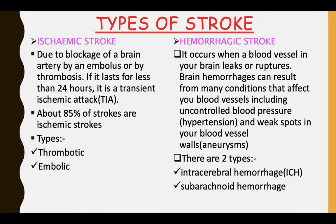There are two main types of stroke: ischemic stroke and hemorrhagic stroke. Ischemic stroke is due to the blockage of a brain artery by an embolus or by thrombosis. If it lasts for less than 24 hours, it is called a transient ischemic attack. About 85% of strokes are ischemic strokes.